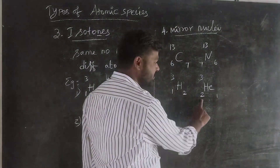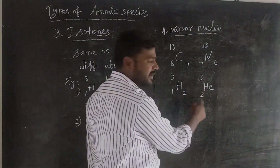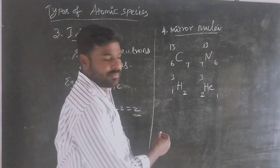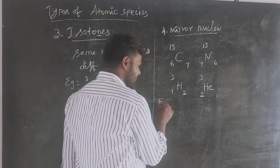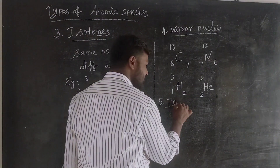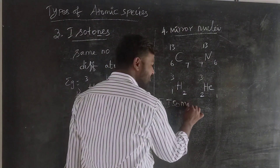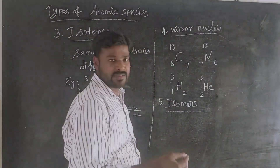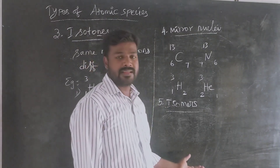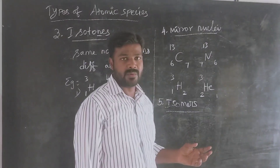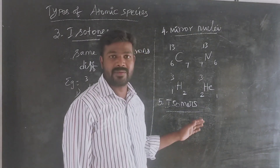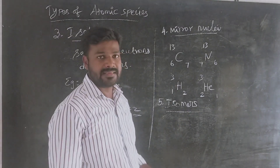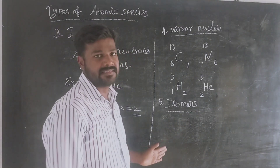If you look at the mirror, you will see the mirror nucleus. Next is isomers. We will see isomers in organic chemistry too. In nuclear isomers, there is one element with the same mass number and atomic number, but they are different in energy states.